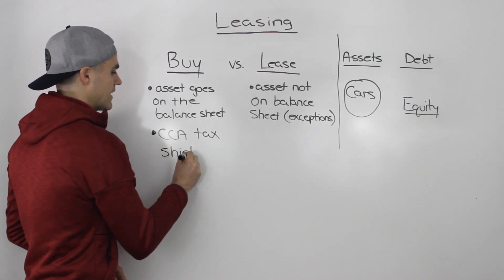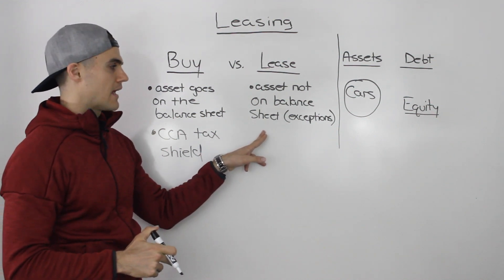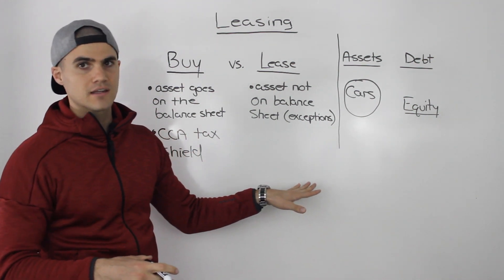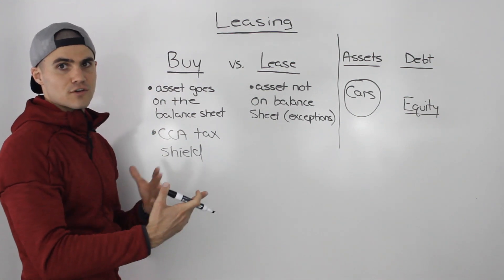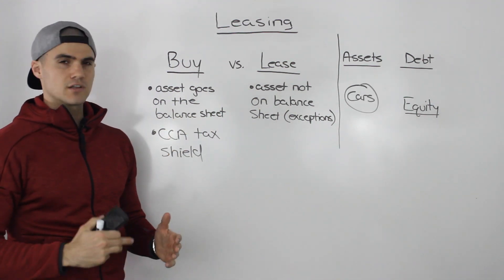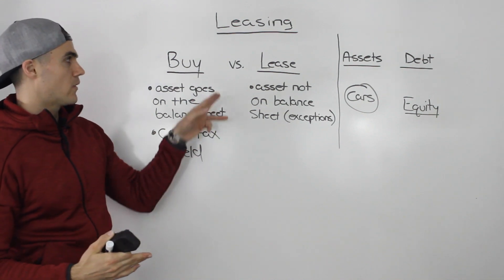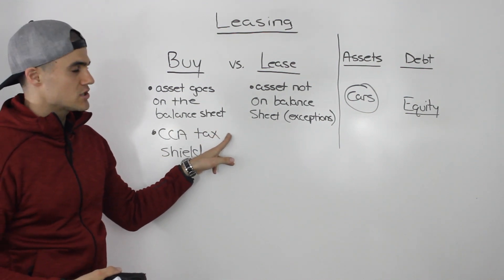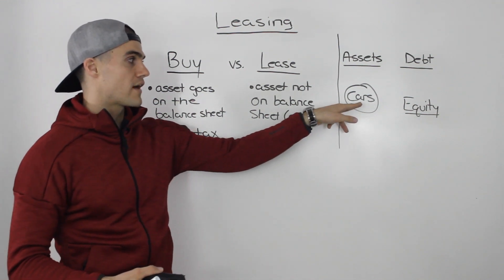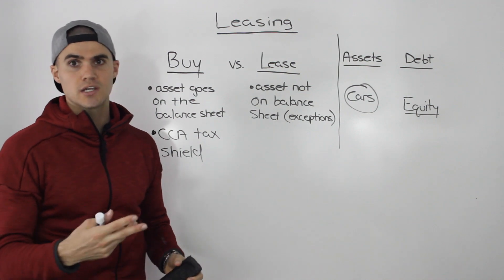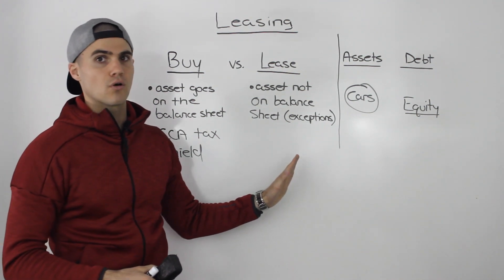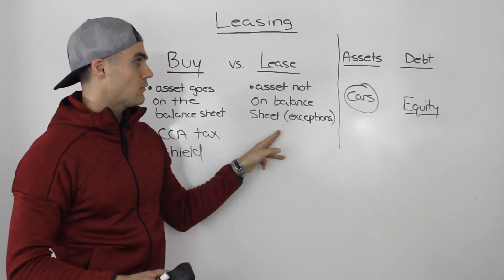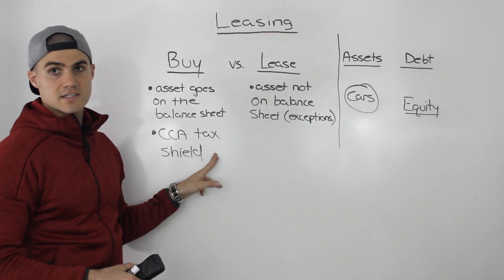That's actually another benefit of buying an asset — you get that CCA tax shield — and that's something you don't get when you are leasing. However, the CCA tax shield can also be case dependent, because maybe your company is in a lower tax bracket, so that CCA tax shield is not as effective as it would be if your company were in a higher tax bracket. So sometimes it might be more worth it to just lease the asset, especially if it's depreciating in value — whether that's cars or a machine your business needs — and you may want to keep that off your balance sheet.